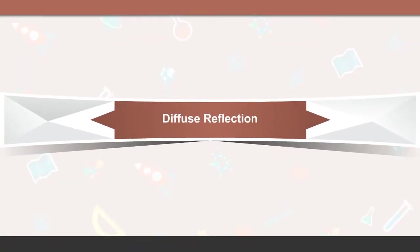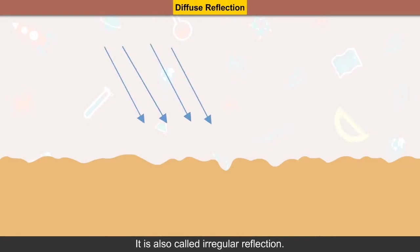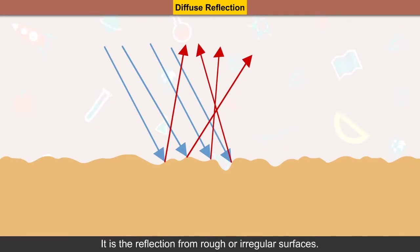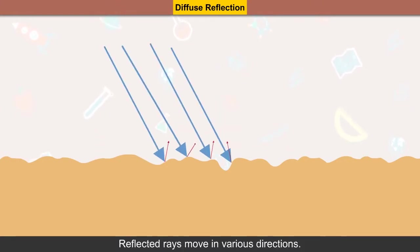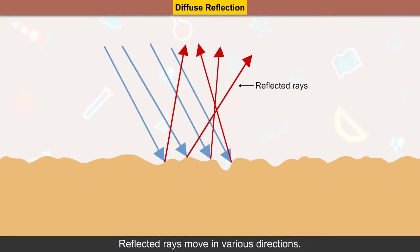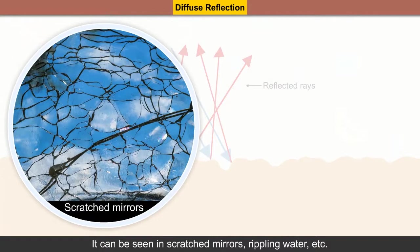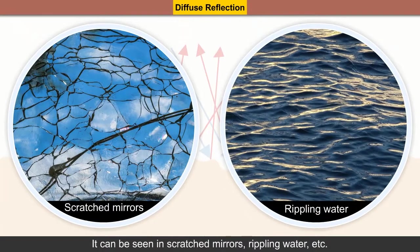Diffused reflection, also called irregular reflection, is the reflection from rough or irregular surfaces. Reflected rays move in various directions and the image is diffused or irregular. It can be seen in scratched mirrors, rippling water, etc.